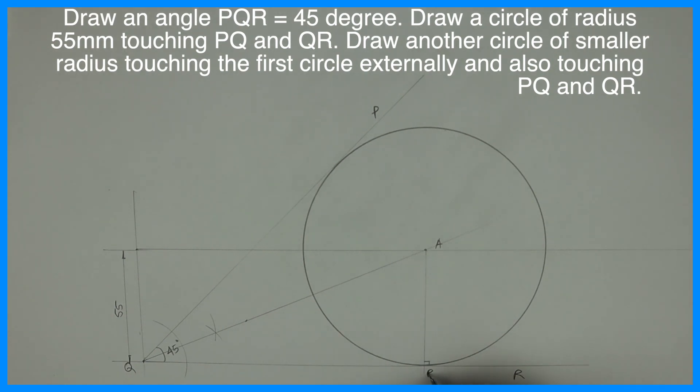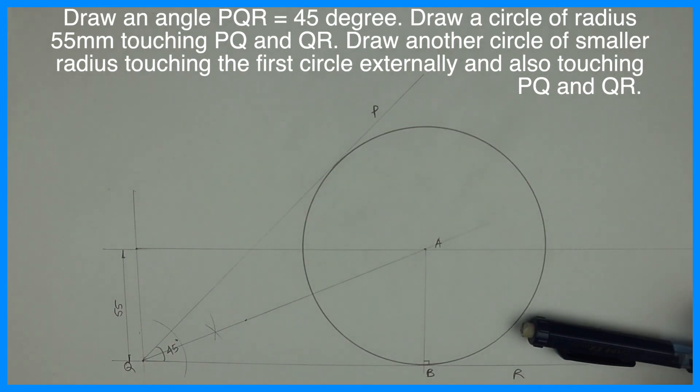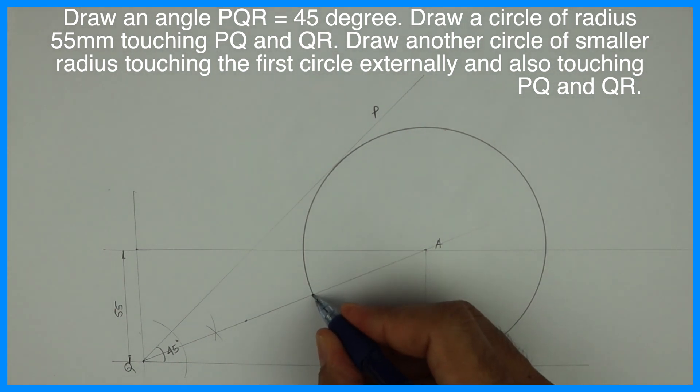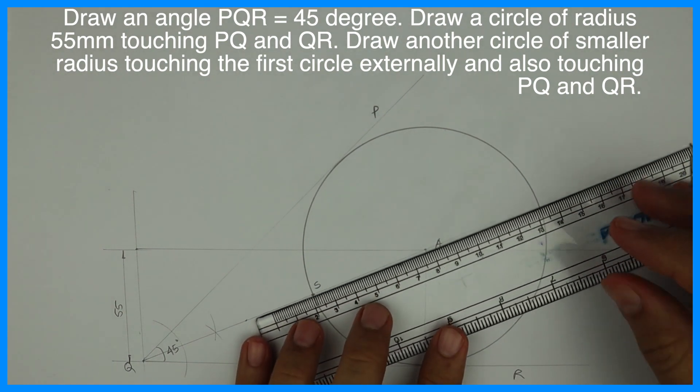Now we need to draw one smaller circle inside. This is B. This is done. Now we need to draw one more smaller circle. So we will mark this point as S and we will draw tangent at point S.